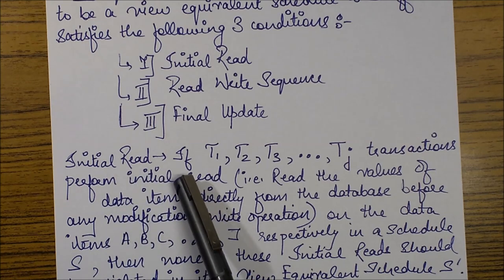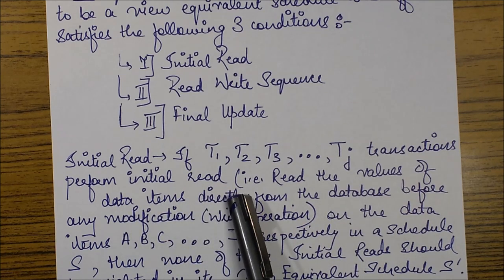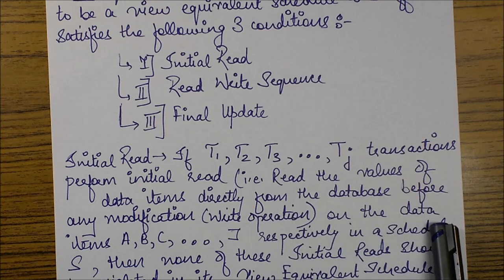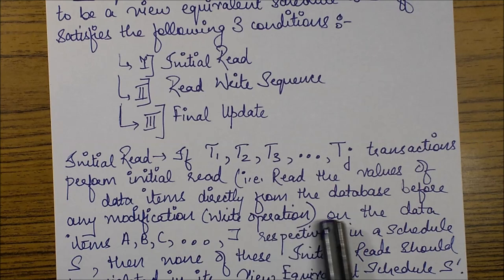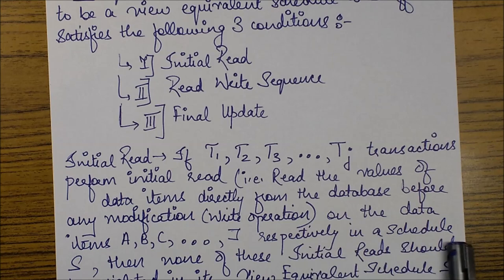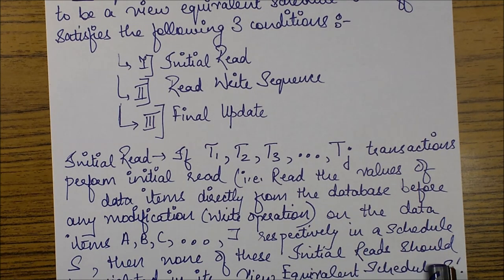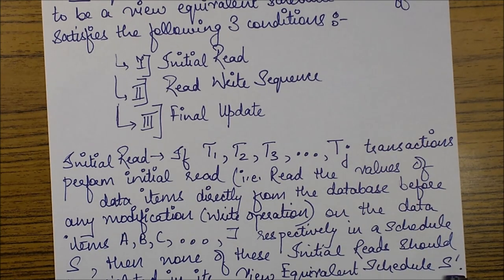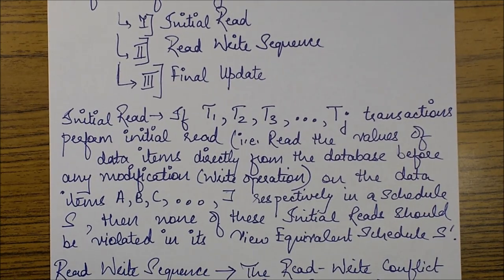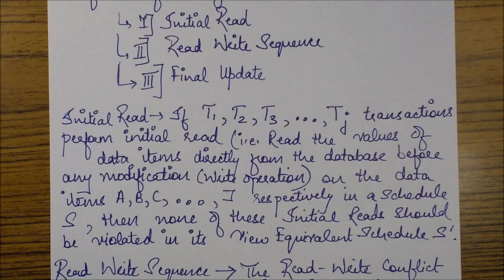The initial read condition says that if transactions T1, T2, T3 through Tj perform an initial read — that is, read the values of data items directly from the database before any modification or write operation on data items A, B, C through J respectively in schedule S — then none of these initial reads should be violated in its view equivalent schedule S'. Basically, if a transaction is reading some value from the database in a certain schedule, then in its view equivalent schedule it should also read that value from the database itself, not a modified value.